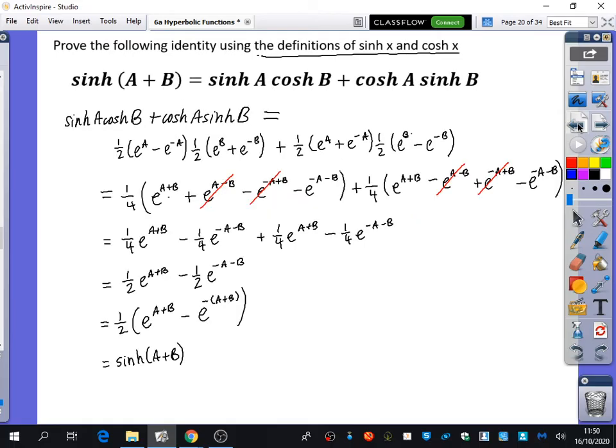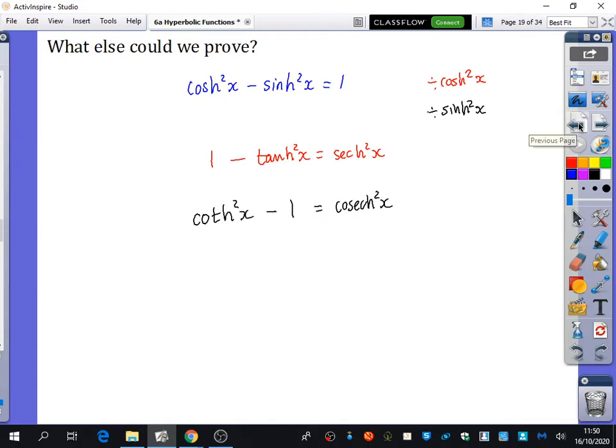And I'm also going to go back through some of the other ones that we've got here. This one that we have, well, from trigonometry, it is normally sine squared x plus cos squared x equals 1.